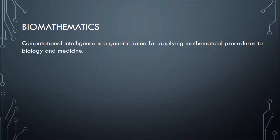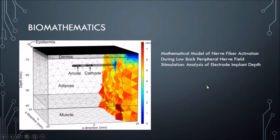Bio-mathematics is a generic name for applying mathematical procedures to biology and medicine. One example is a paper published recently in which the author applied finite element techniques for understanding the concept of pain — specifically, when you apply an electrode and electricity, and how it propagates inside the skin. This kind of technique is widely applied in material science.